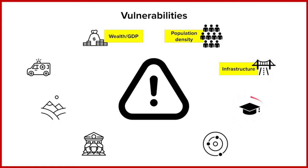The next one, represented by the mortarboard icon, is education. We're not just talking about the education you're receiving right now. Education also includes whether people living in an earthquake-prone area or near a volcano know what to do when a warning goes out. Do they know to go to the smallest room in their house? Do they stand in the doorway rather than run out into the street? All of this reduces vulnerability by lessening injury and death because people know how to respond properly.